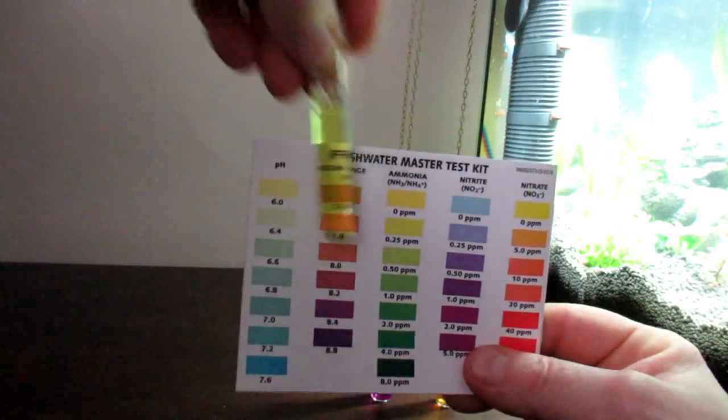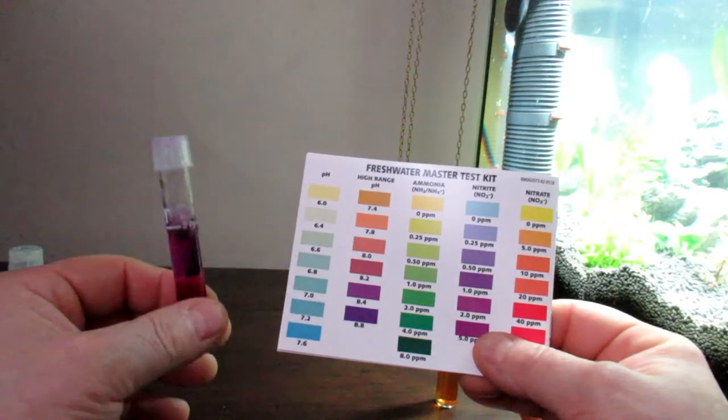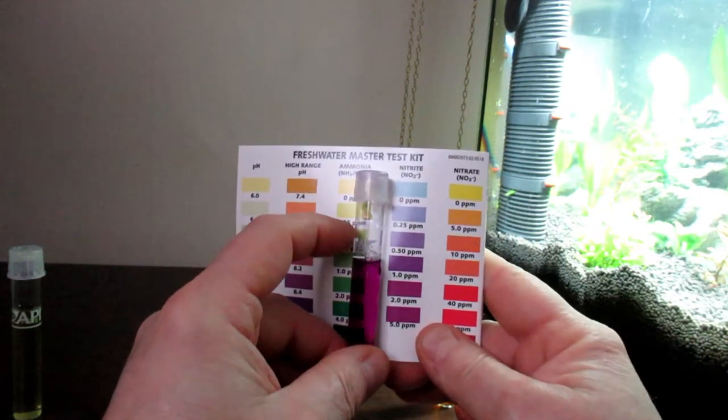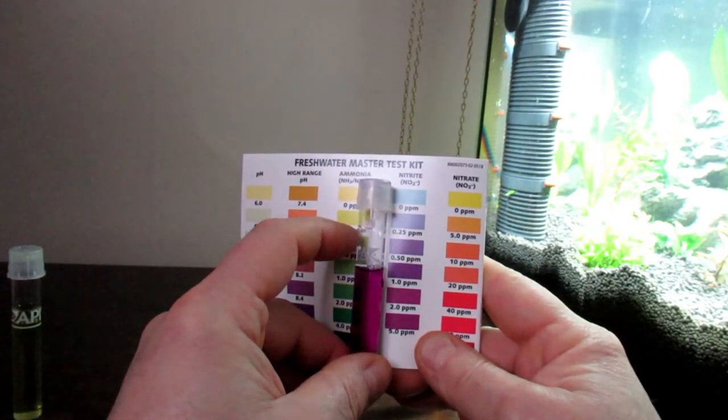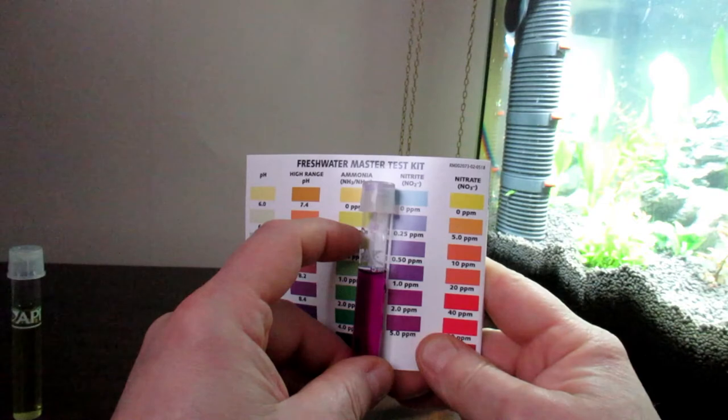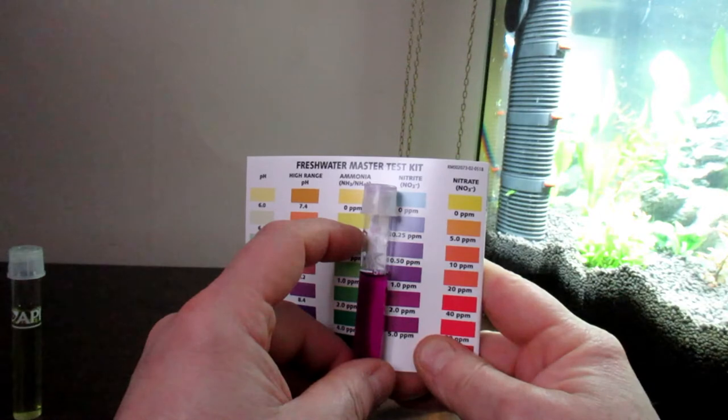So the next one we're going to have a look at is the nitrite, and the nitrite is off the mark. As you can see it's way way high. Now that's good, that's positive, because that means that ammonia is being converted into nitrite. So there is beneficial bacteria in that tank.